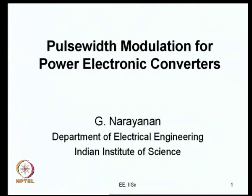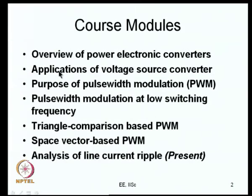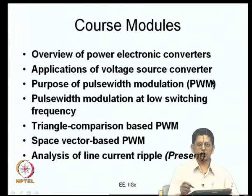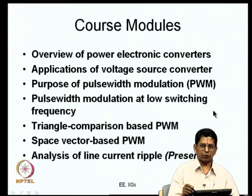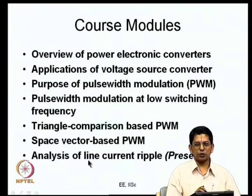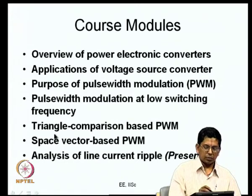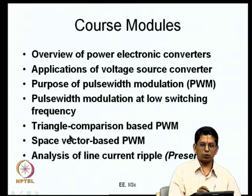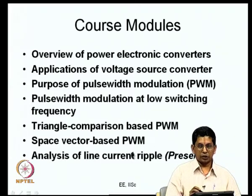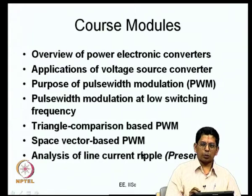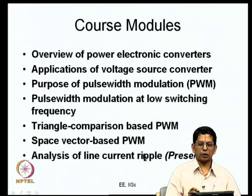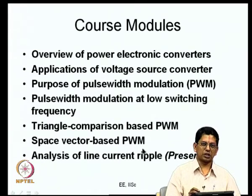Welcome back to this lecture series on pulse width modulation for power electronic converters. We have been looking at various modules as part of this course. We had an overview of power electronic converters and looked at applications of voltage source converters. Then we looked at some low switching frequency PWM, and in the last couple of modules we were looking at PWM generation when the switching frequency is fairly higher than the fundamental or modulation frequency. In the triangle comparison methods we looked at sine triangle PWM, third harmonic injection methods, various bus clamping PWM methods, and in space vector based PWM we saw similar methods including the advanced bus clamping PWM method.